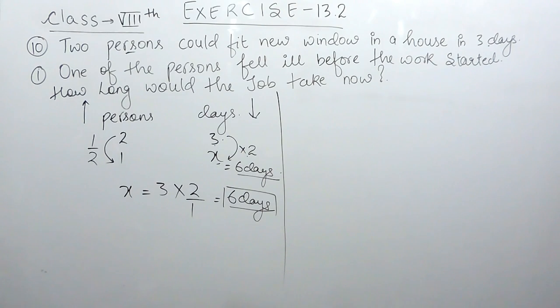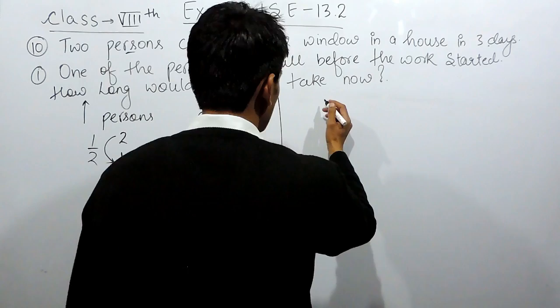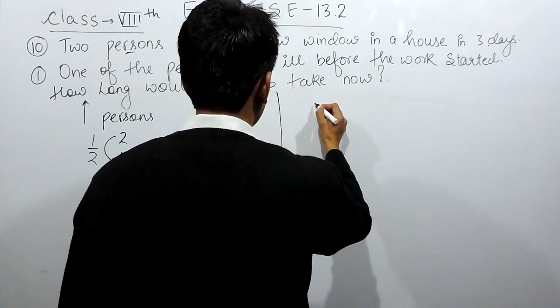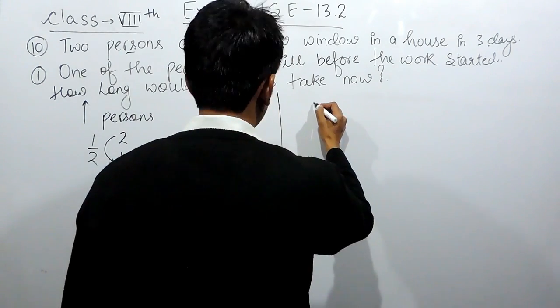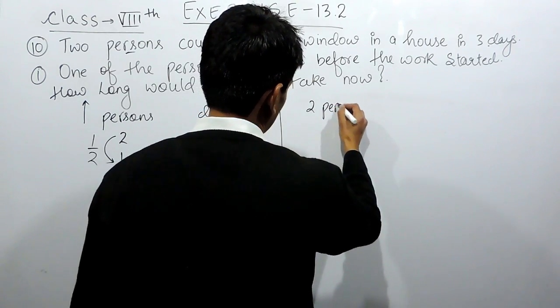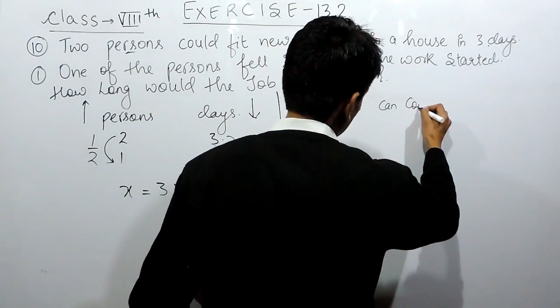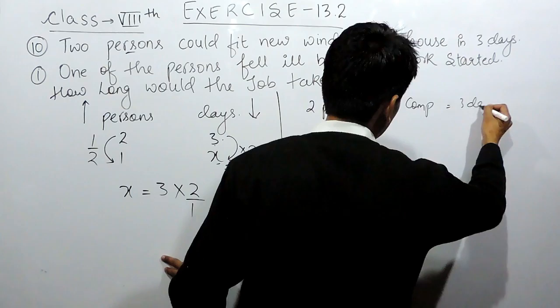It is given that 2 persons could fit a window in 3 days. You have to find if only 1 person works, the number of days that it will take to complete this work.